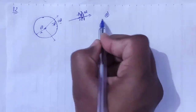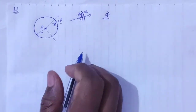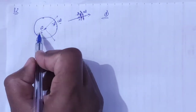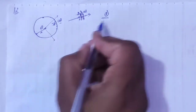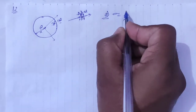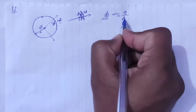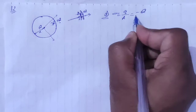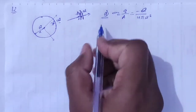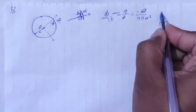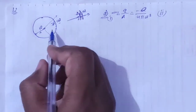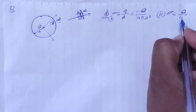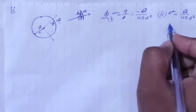First question: find the surface charge density on the inner surface and outer surface. Surface charge density sigma equals charge upon area. The radius is A. For the inner surface, sigma equals minus Q upon 4 pi A squared. For the outer surface, the surface charge density equals plus Q upon 4 pi A squared. That is the answer for part A.